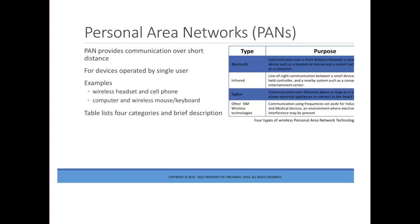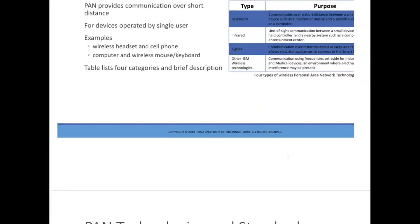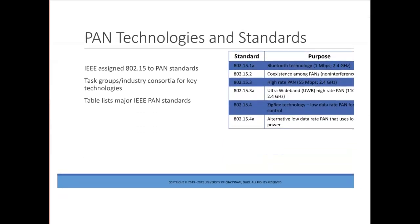Personal Area Network, or PAN technology, provides communication over a short distance. It is intended for use with devices owned and operated by a single user — for example, between a wireless headset and a cell phone, or a computer and a nearby wireless mouse or keyboard. PAN technologies can be grouped into four categories, listed in the table with brief descriptions of each. IEEE has assigned the number 802.15 to PAN standards, and several task groups and industry consortia have been formed for each of the key PAN technologies.